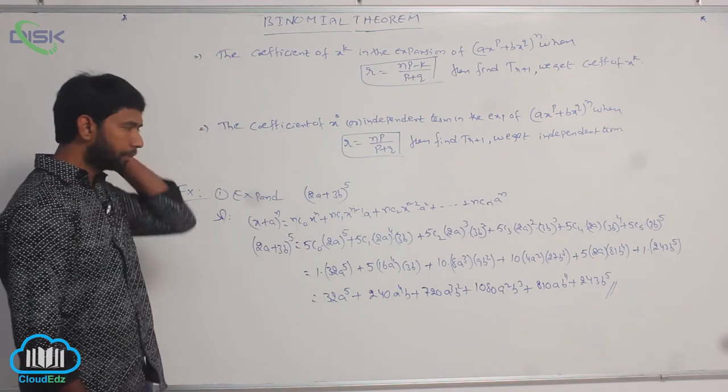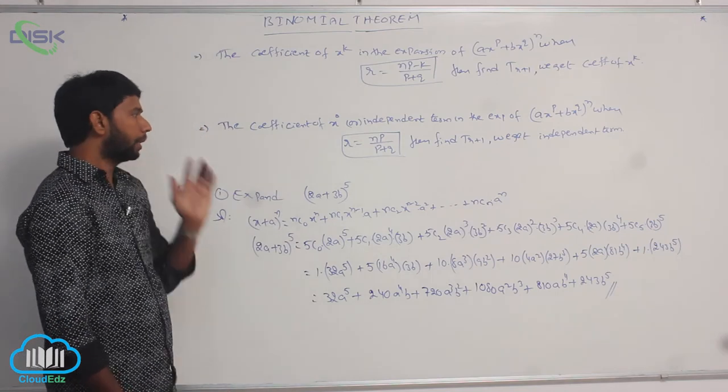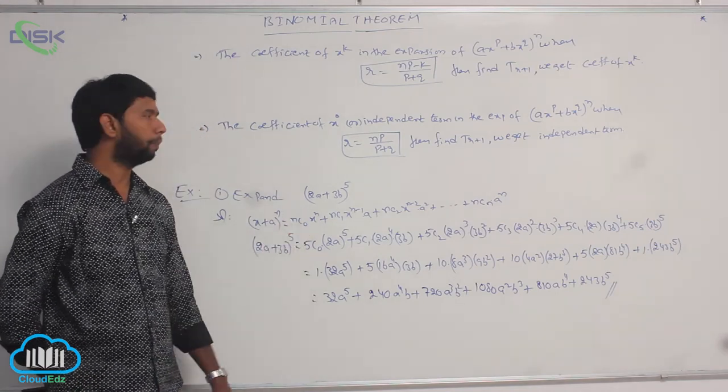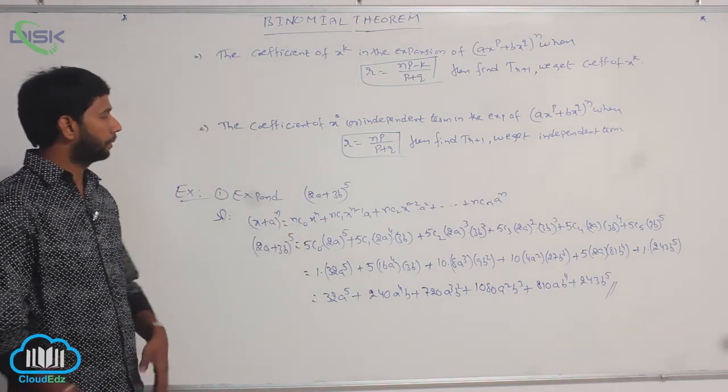This is the expansion of (2a + 3b)^5. Thank you.